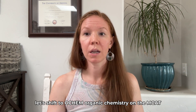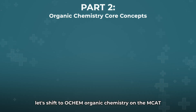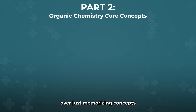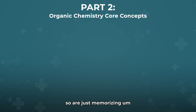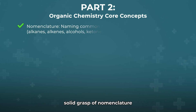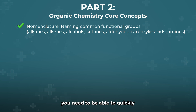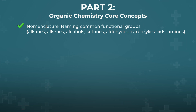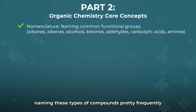Let's shift to O-Chem. Organic chemistry on the MCAT really emphasizes conceptual understanding over just memorizing things to spit out. You really want to make sure you have a solid grasp of nomenclature. You need to be able to quickly recognize functional groups like alkanes, alcohols, and carboxylic acids — those are the key three. Make sure that you've practiced naming these types of compounds pretty frequently.